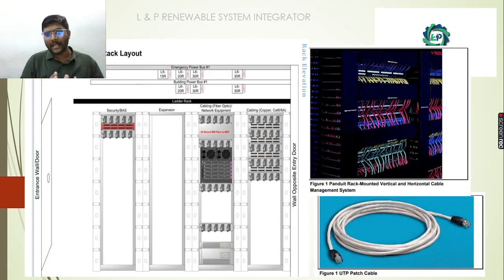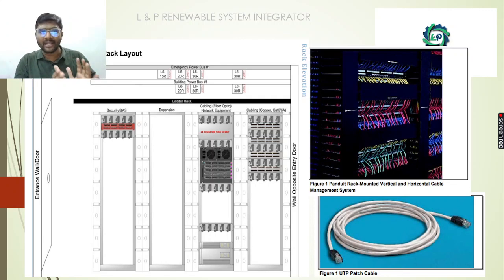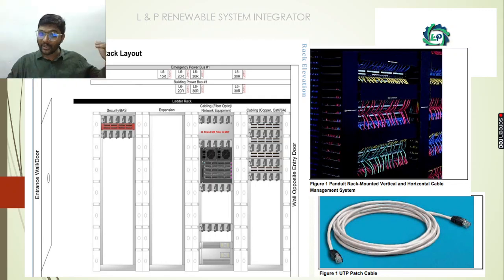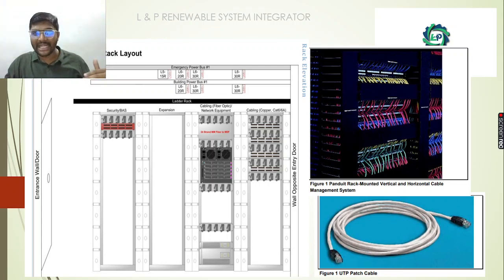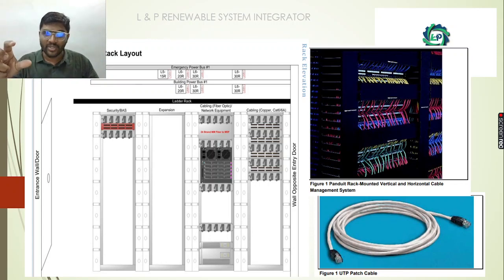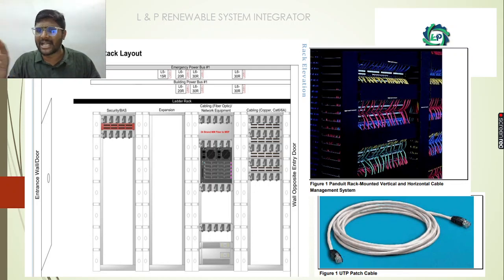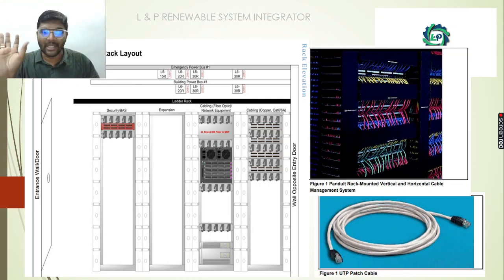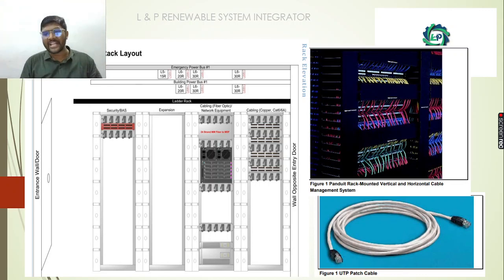This is a sample idea of a rack layout. In this case, there are many different racks. There is a security system, building automation, and new provisions. If you are doing the cabling — especially the cabling — there are different cables to be connected. There are provisions in there.